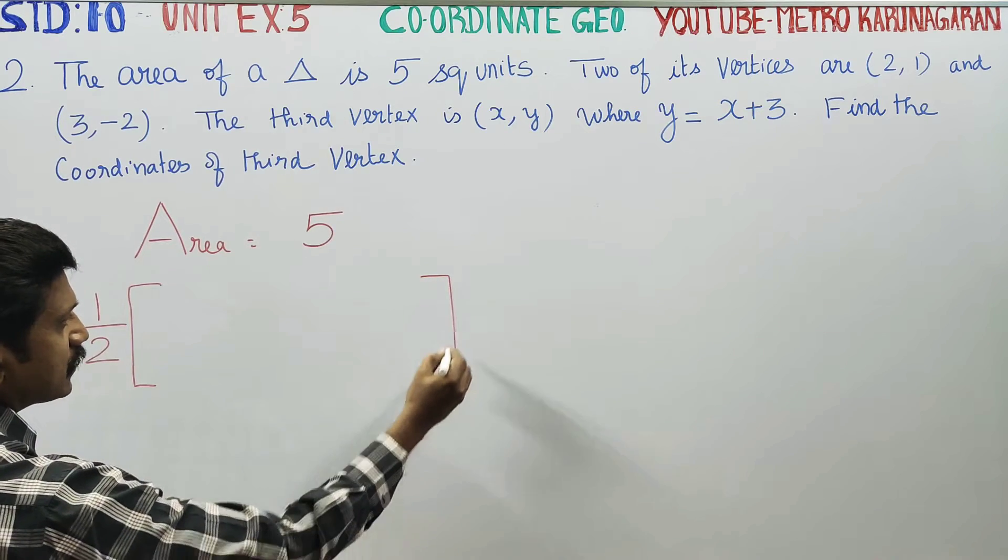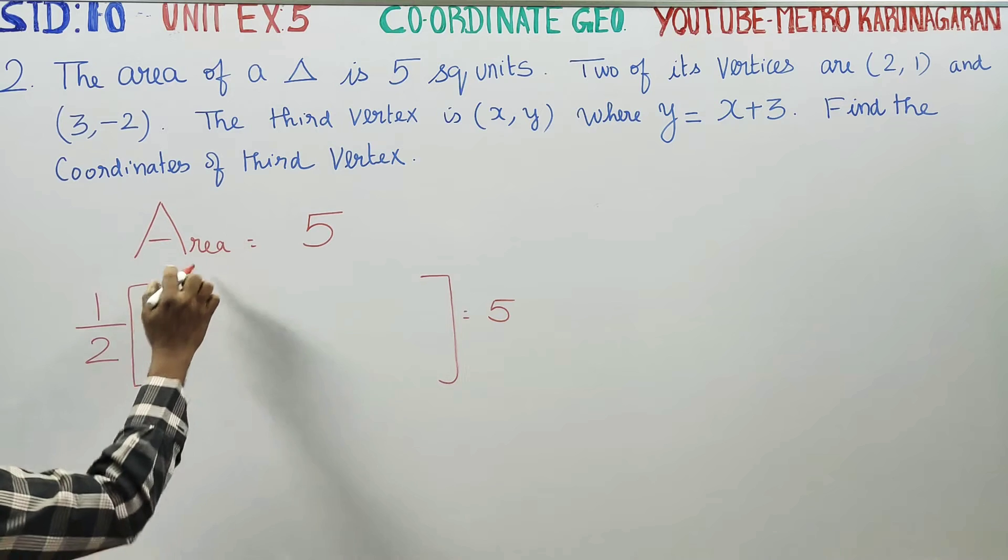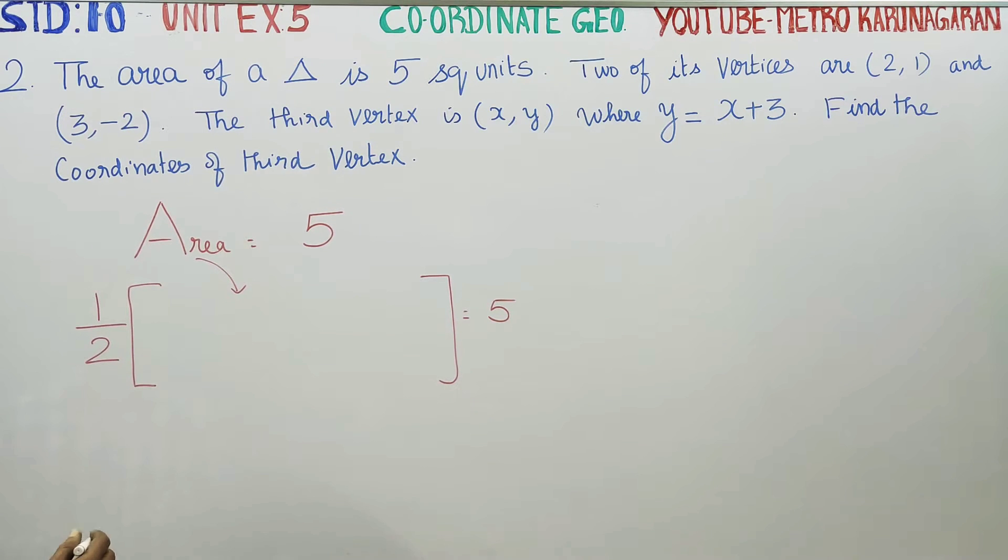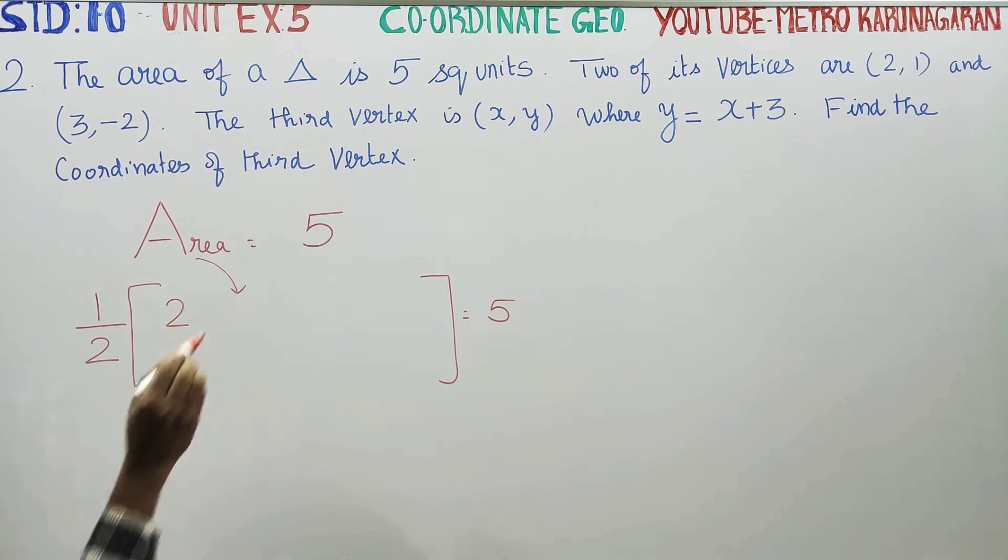Half. Let's write down the given points. Half, we'll write the area formula. The points we have are: first point is (2,1), first vertex.